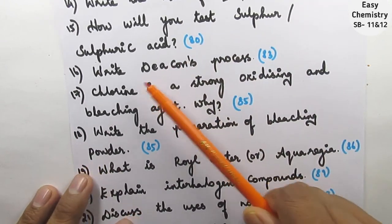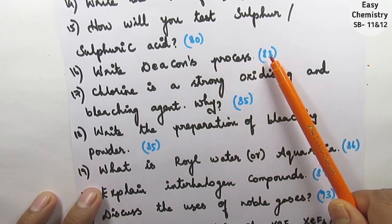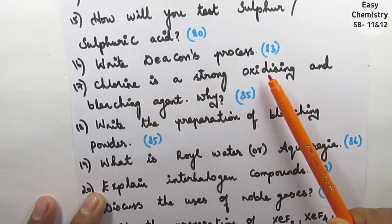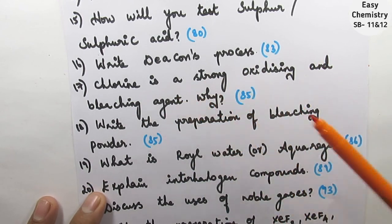Question 16: write Decon's process. This is page number 83. Question 17: chlorine is a strong oxidizing and bleaching agent, why? This is very important.